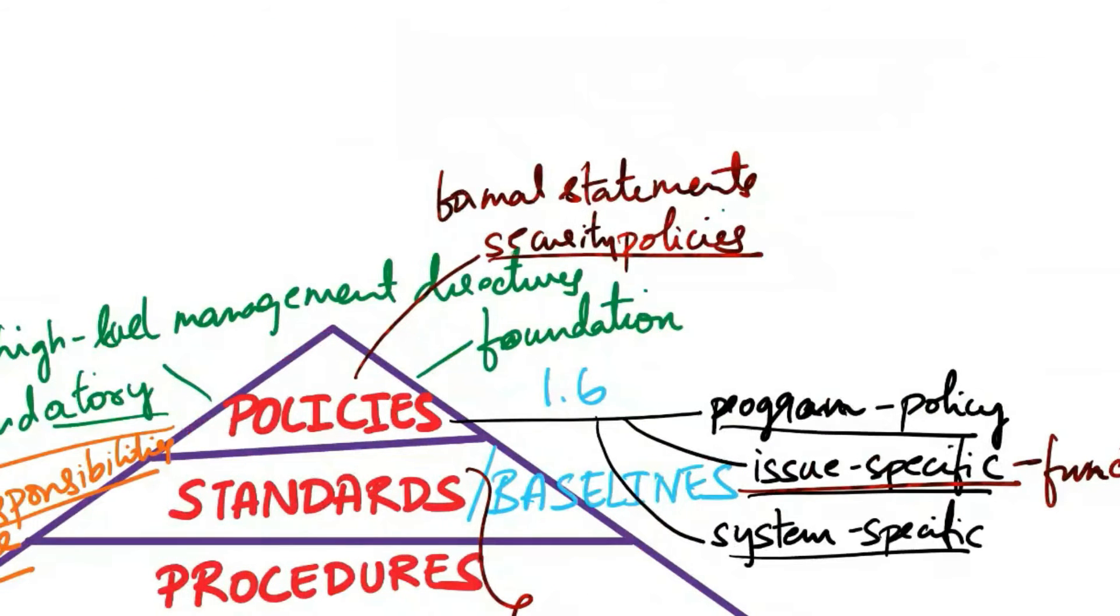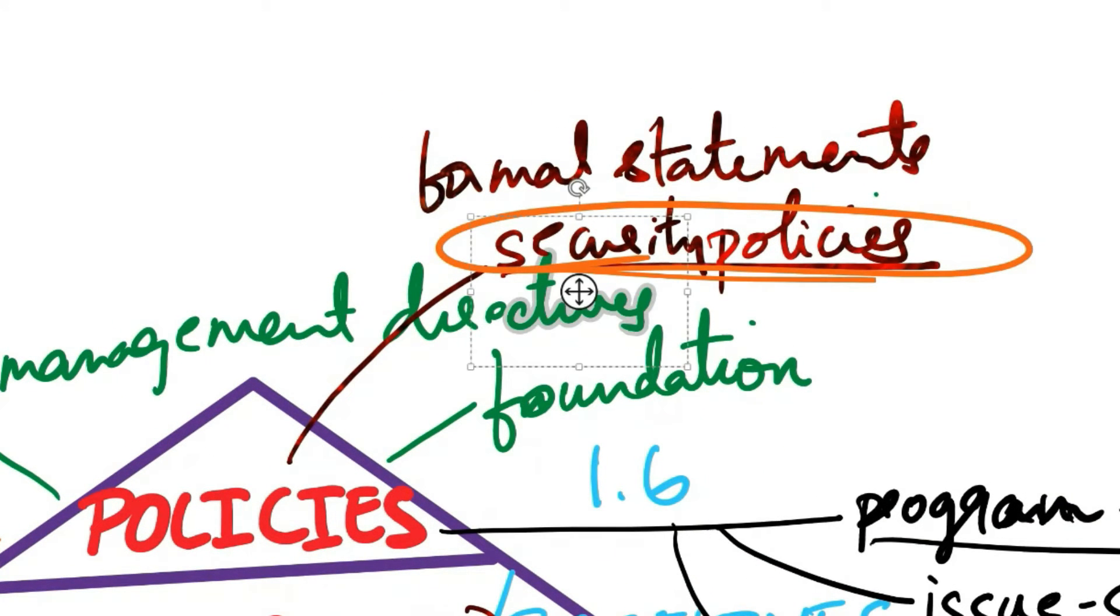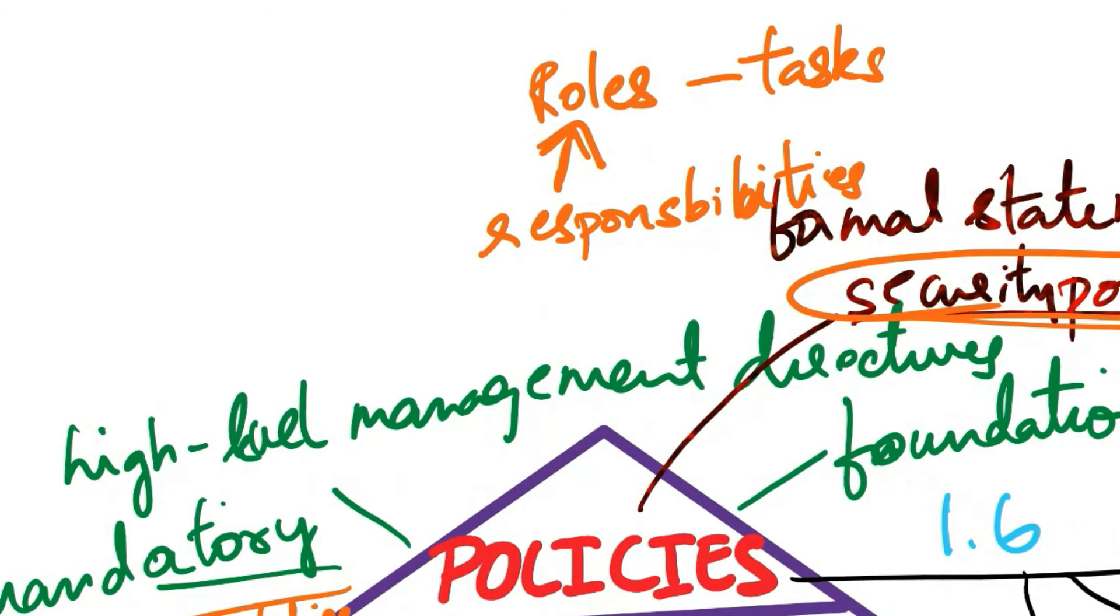Security policies, including standards, guidelines, and procedures form the basis of an organization's information security program. They outline goals, rules, and responsibilities. Roles are defined by tasks and responsibilities fit into roles rather than assigning specific tasks to individuals. Policy is frequently utilized as evidence that senior management has demonstrated due diligence in safeguarding the organization against potential risks such as data disclosure, cybersecurity attacks, disasters, etc.